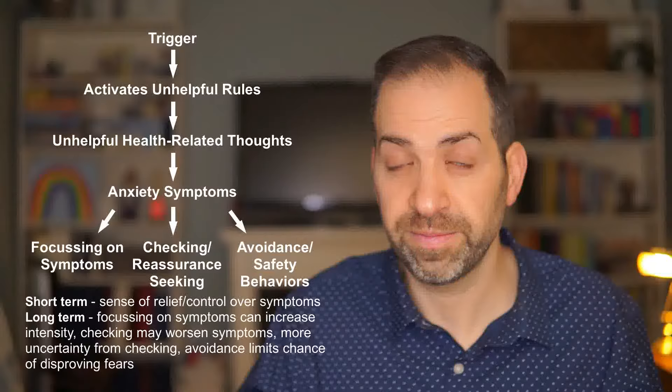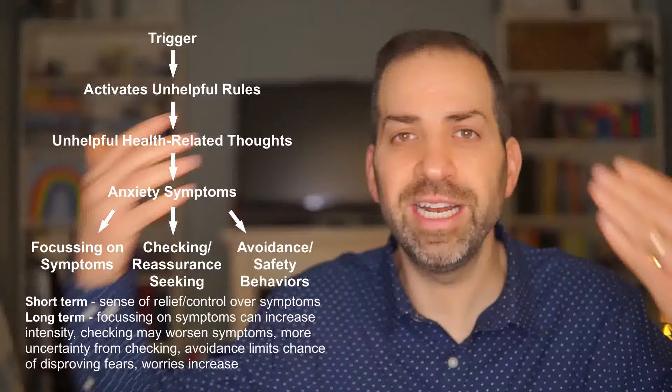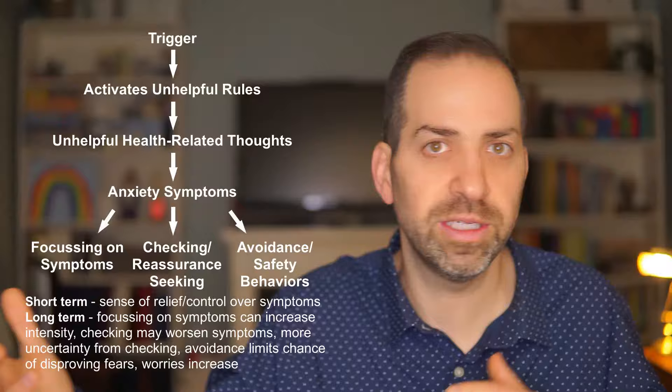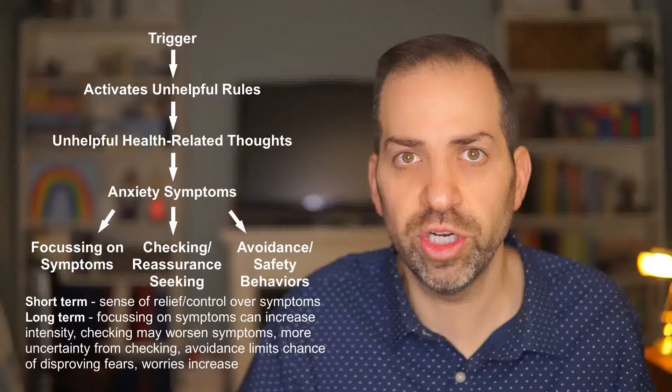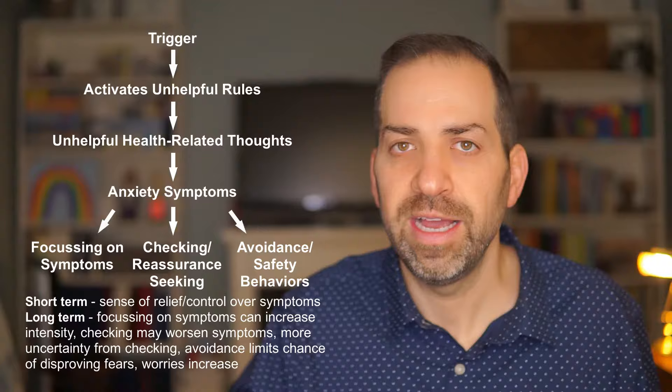What ends up happening is my worry about my health continues and probably increases, which then increases my anxiety, which in turn brings on new physical sensations of anxiety — leading me to question what's going on now. It started in my throat, but now I'm noticing pain and soreness in my shoulders and neck. Is it spreading? This leads to an increased desire to focus on the symptoms, check and seek reassurance about what's happening, and to avoid and use safety behaviors to try to feel less anxious. It's just a vicious cycle that keeps going and going.